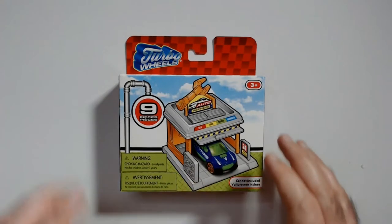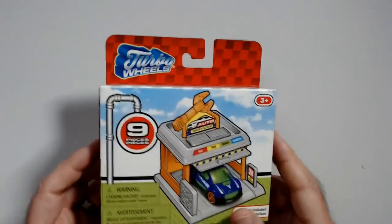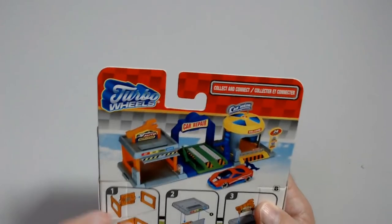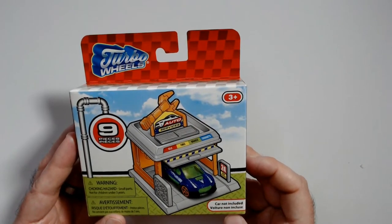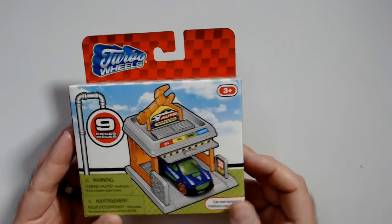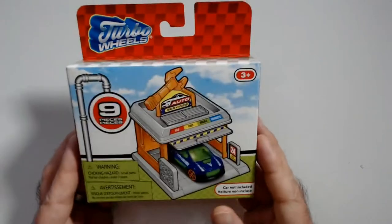Welcome back to RR. We have a Turbo Wheels line. These things attach together, little garage pieces. This is Auto Services. Car not included, so I guess it's a Dollar Tree line. Pieces put it together.